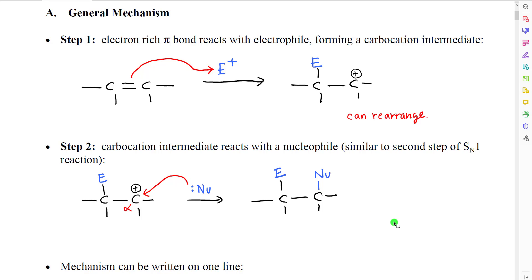There's a general mechanism for many of the alkene addition reactions. In the first step of the mechanism, the carbon-carbon pi bond is attracted to and makes a bond to the electrophile. This occurs because in the region of the pi bond, we have a high density of electrons — we say that it is electron-rich.